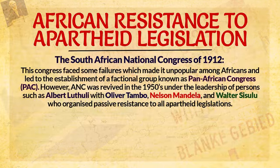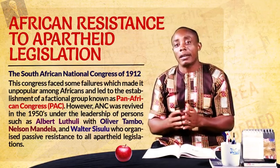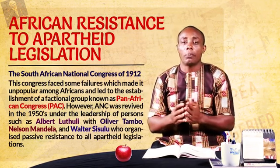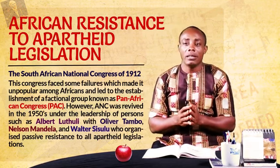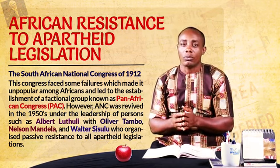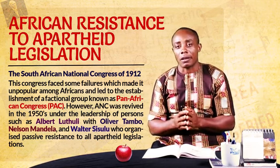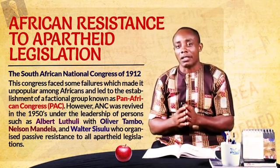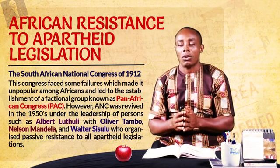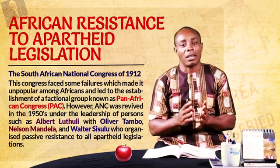Later on, the ANC became unpopular because of some failures, which led to the formation of another party called the Pan-African Congress — PAC. However, in the early 1950s, the African National Congress was revived due to the presence of leaders such as Abadloutili, Oliver Tambo, Nelson Mandela, and Walter Sisulu. These leaders successfully organized passive resistance to apartheid policies. A very good example was in 1959 when the ANC called for another destruction of passes, although the PAC hijacked this move, which led to what was known as the Sharpeville Massacre of 1960.